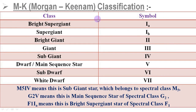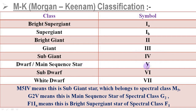Another classification is Morgan-Keenan classification, or MK classification, which is based on luminosity or brightness of the star. According to luminosity, the stars are categorized into eight classes: bright supergiant star represented as Roman IA, supergiant star as Roman IB, bright giant star as Roman II, giant star as Roman III, subgiant star as Roman IV, dwarf or main sequence stars as Roman V — most stars fall into this category — subdwarf star as Roman VI, and white dwarf star as Roman VII.